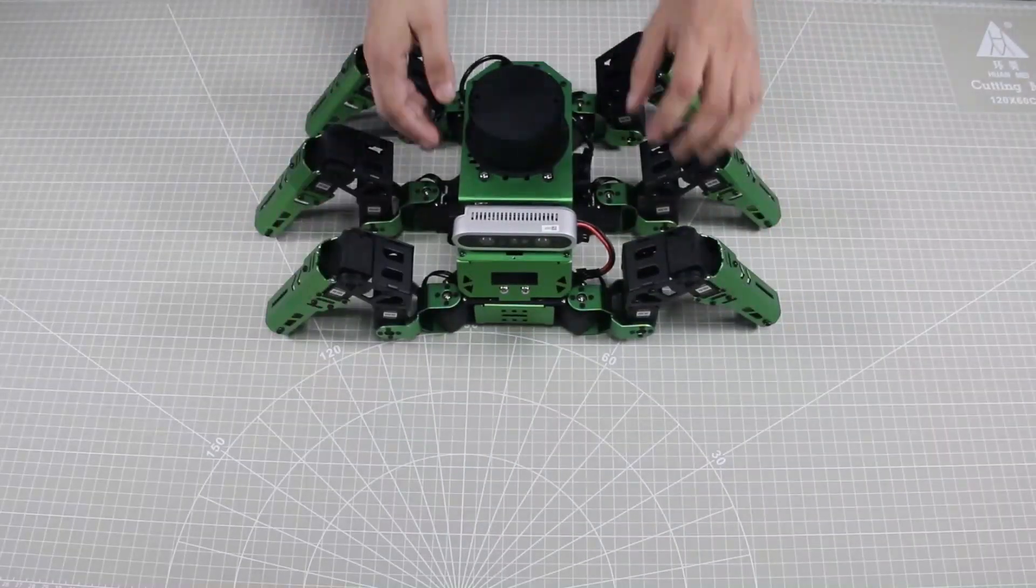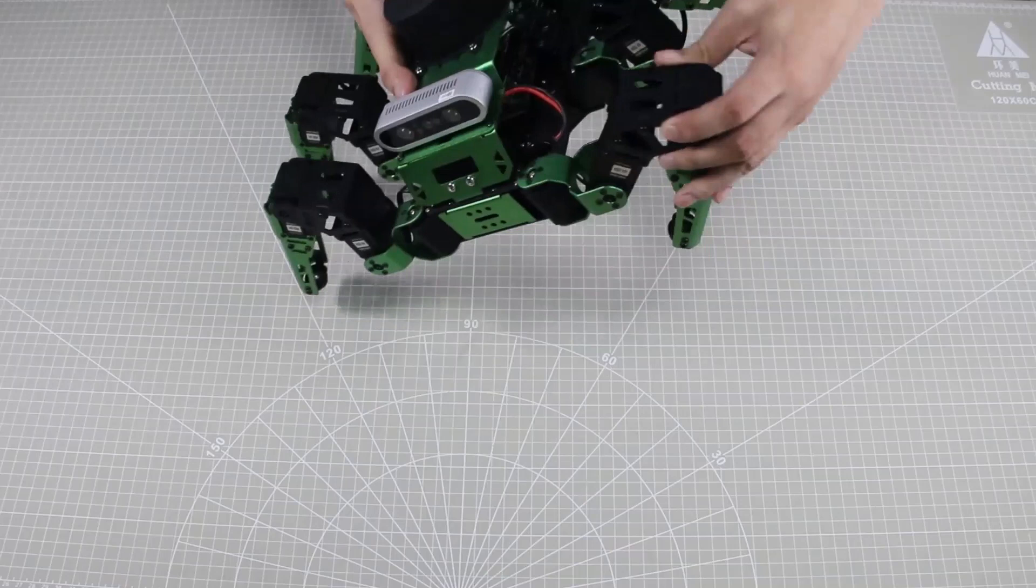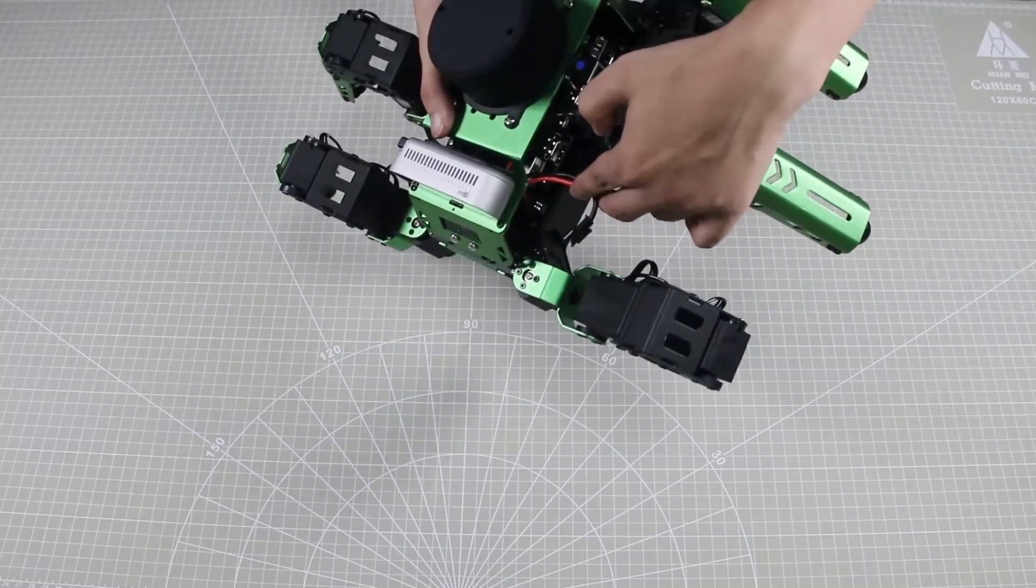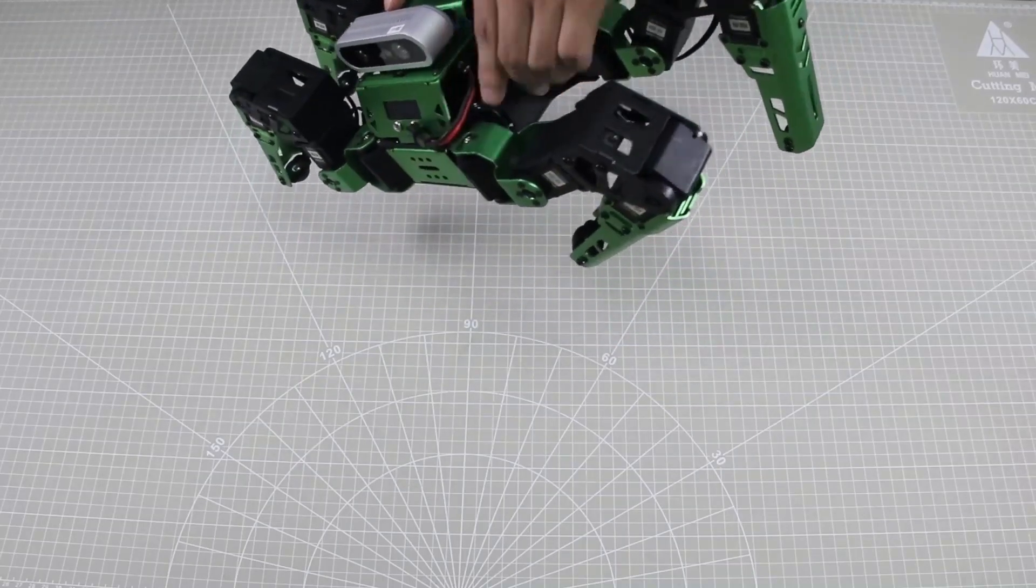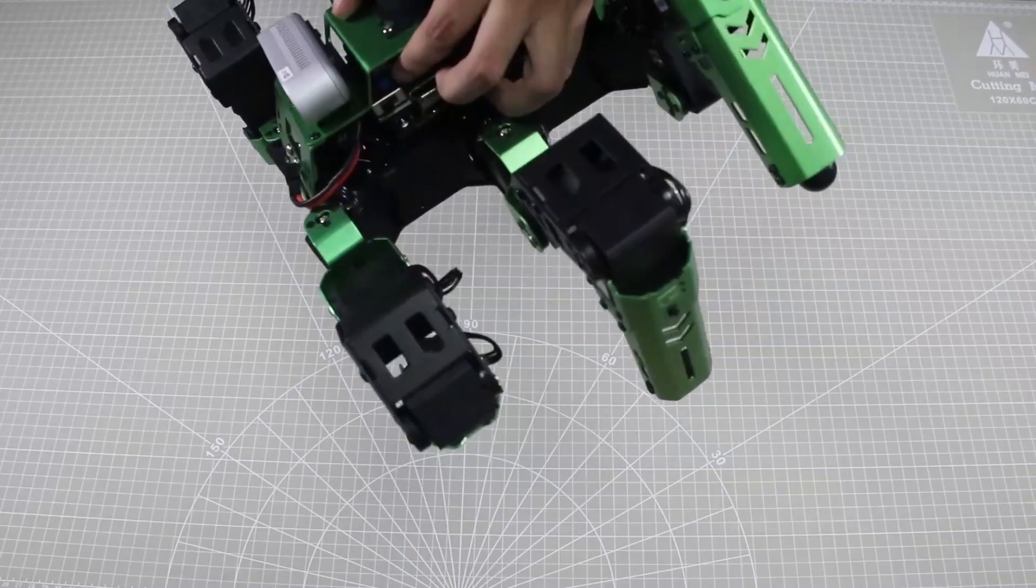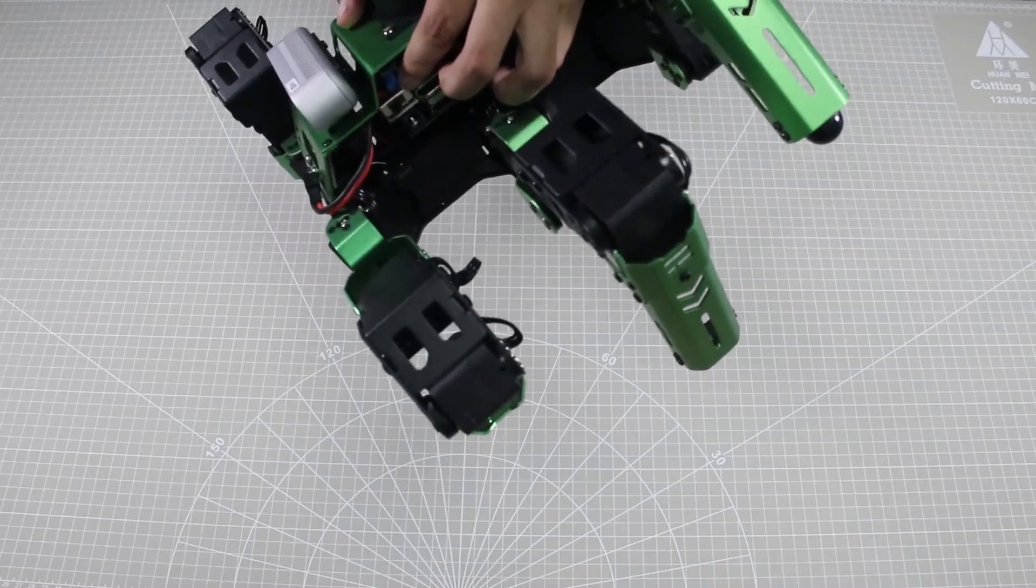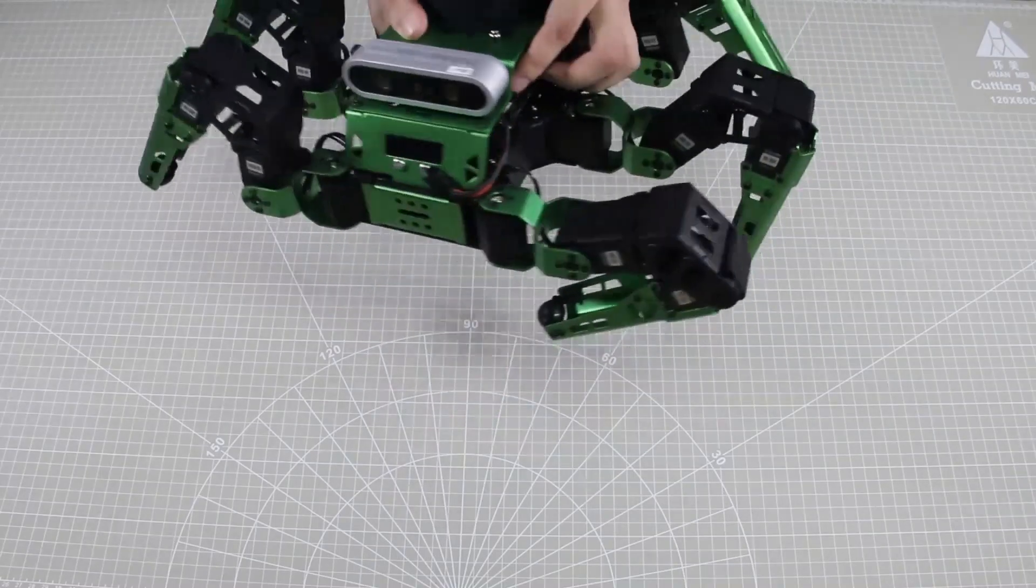Please note that when you receive the robot, battery wires are not connected for delivery safety. Therefore, you need to connect them before operating the robot. Make sure the headset is turned off, then you can connect the wire.